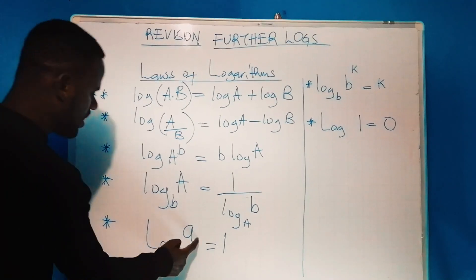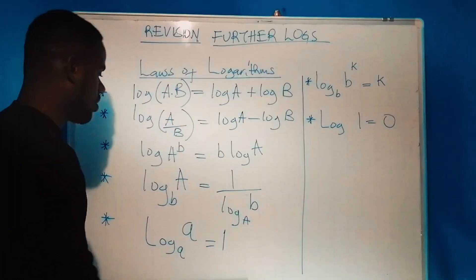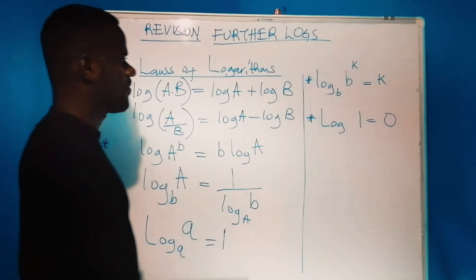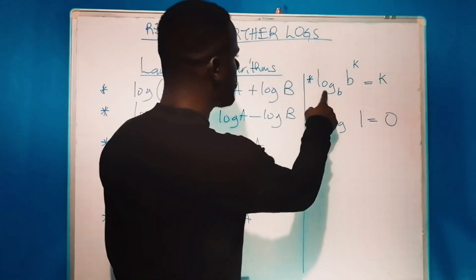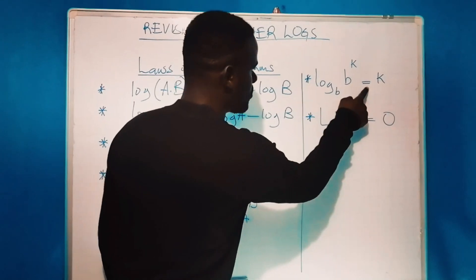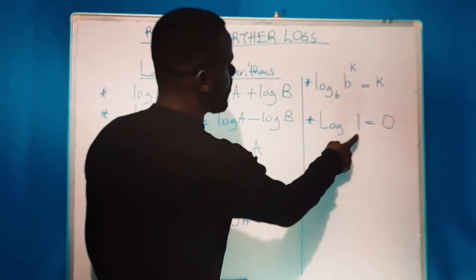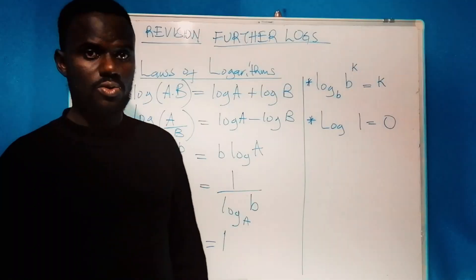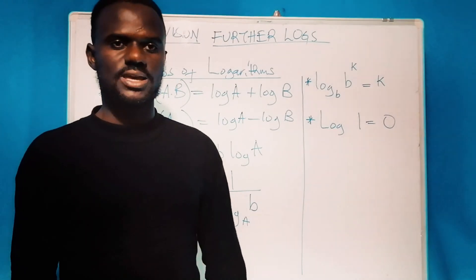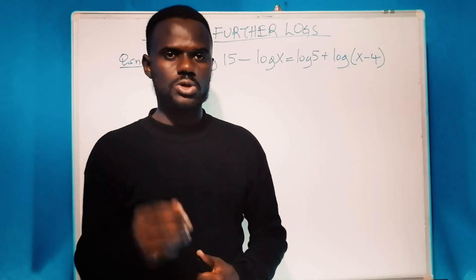Now, log of a to base a equals one, just like log of 10 to base 10 equals one. We also have log of b to the power k to base b, which equals k. Finally, log of one equals zero. You can pause the video and go through all the laws again. Here's a sample question on how to apply what we've learned.